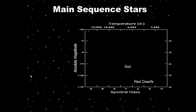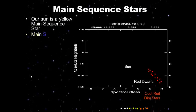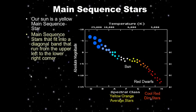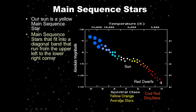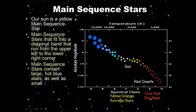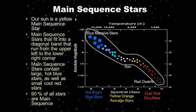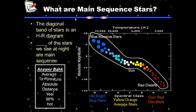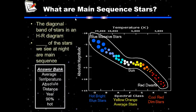The last topic today is main sequence stars. Our sun is a main sequence star — it's in the prime of its life. Stars spend most of their life in the main sequence phase. Main sequence stars fit into a diagonal band that runs from the upper left corner to the bottom right corner of the HR diagram — from cool red stars all the way up to hot blue stars. 90% of all stars you see in the night sky are main sequence stars. For your notes, go ahead and pause while you write — you should be on word bank number six.